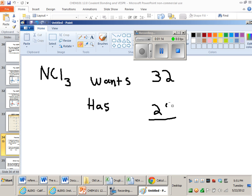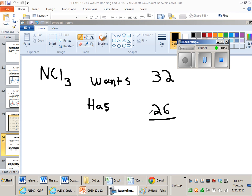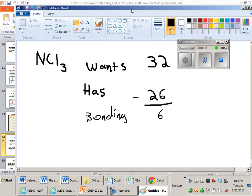Awesome. I make lots of mistakes left and right. So 26. So we're going to subtract these to see how many electrons participate in bonding. And 32 minus 26 is six. So there are six bonding electrons in this molecule. And that means there are three bonds, because each bond contains two electrons.